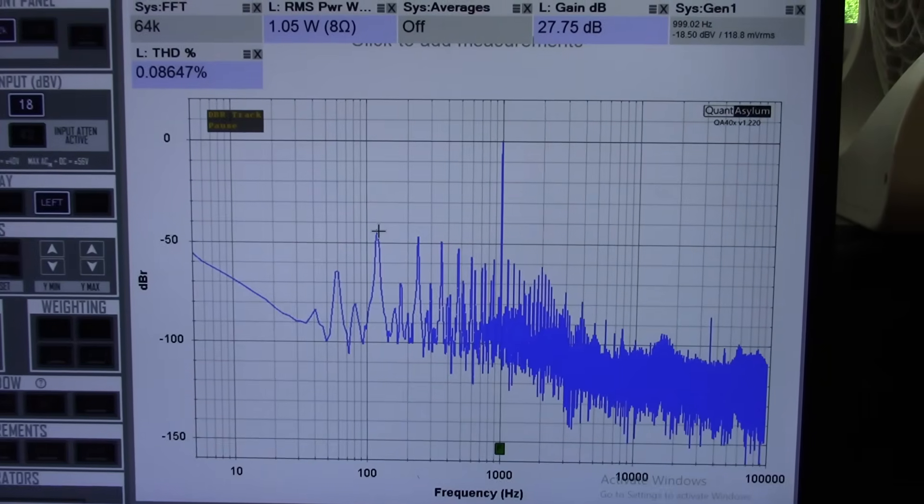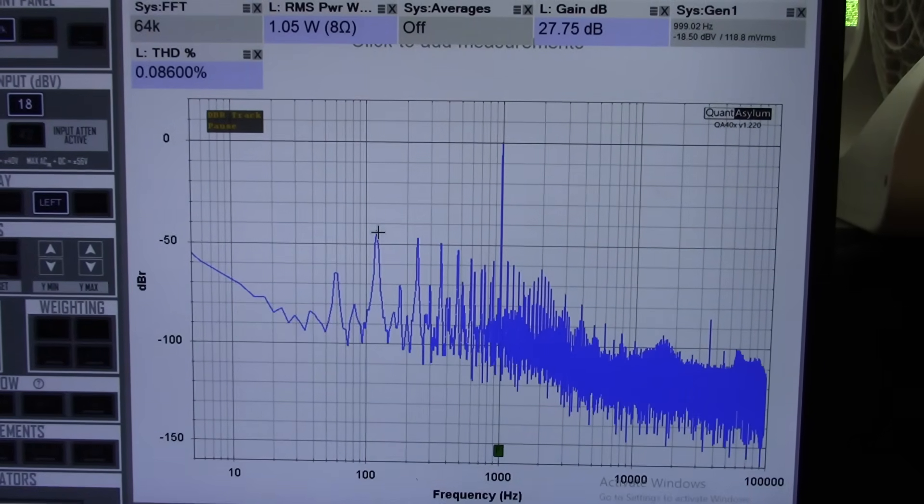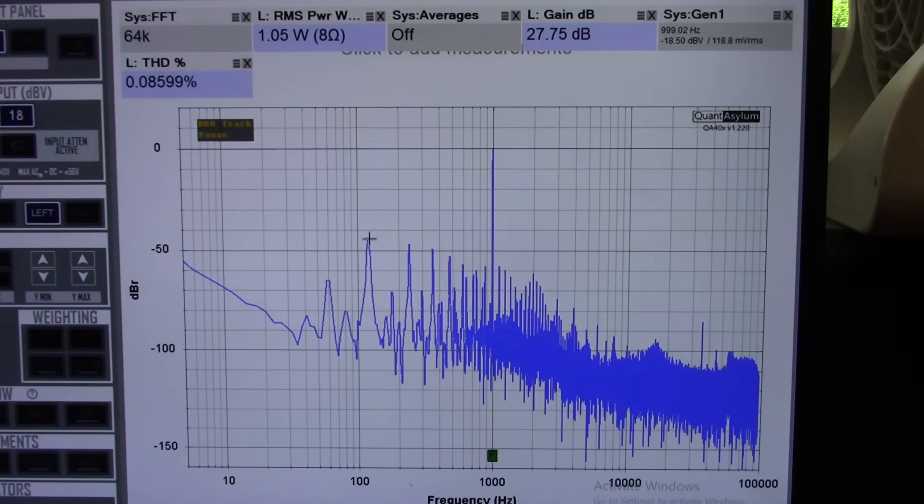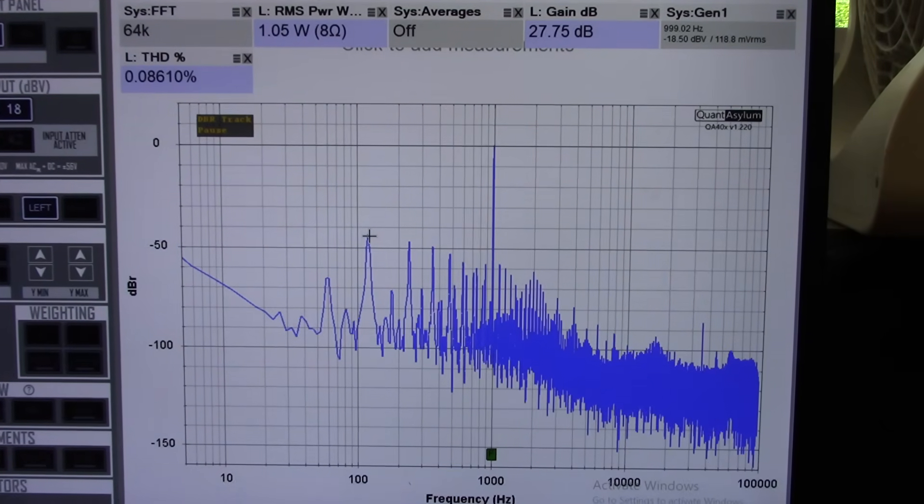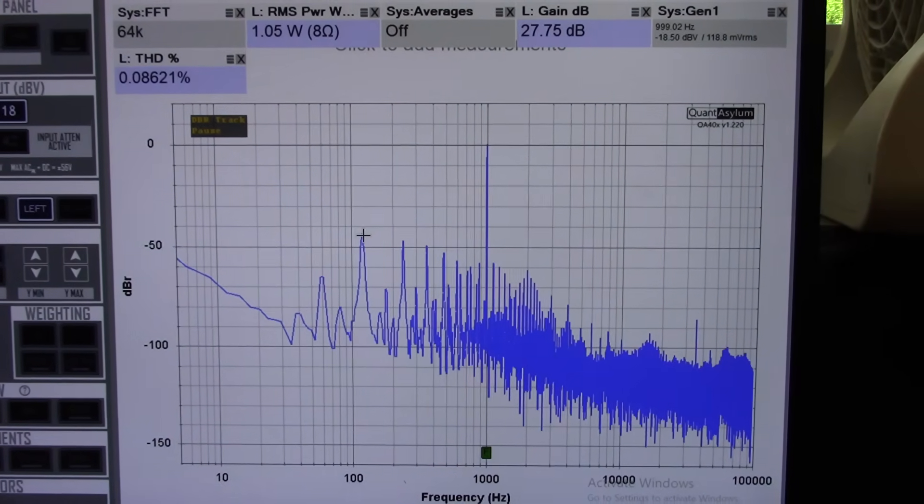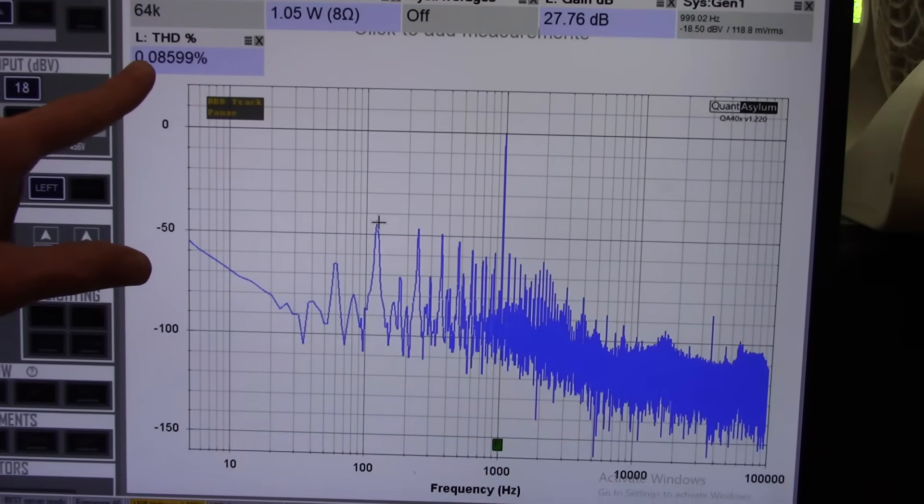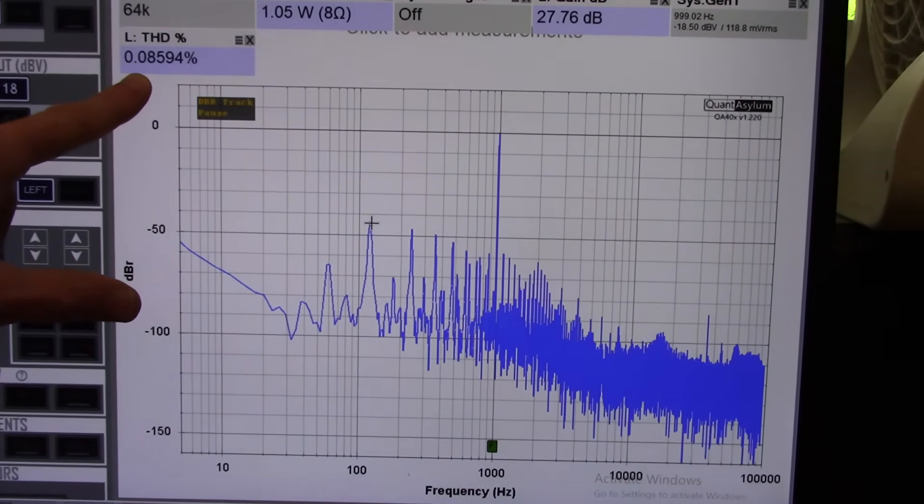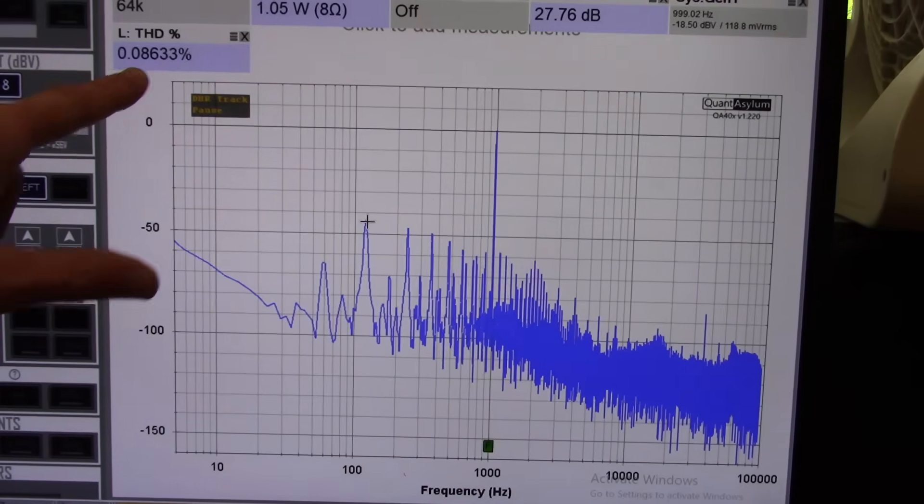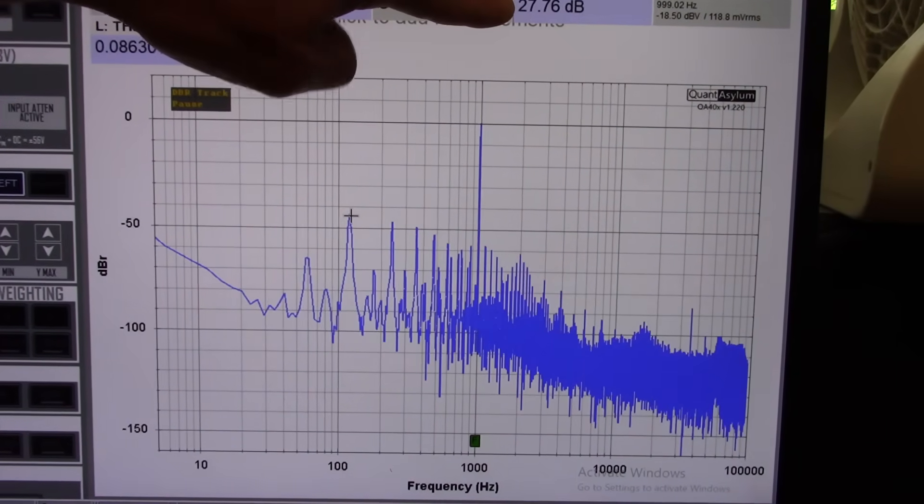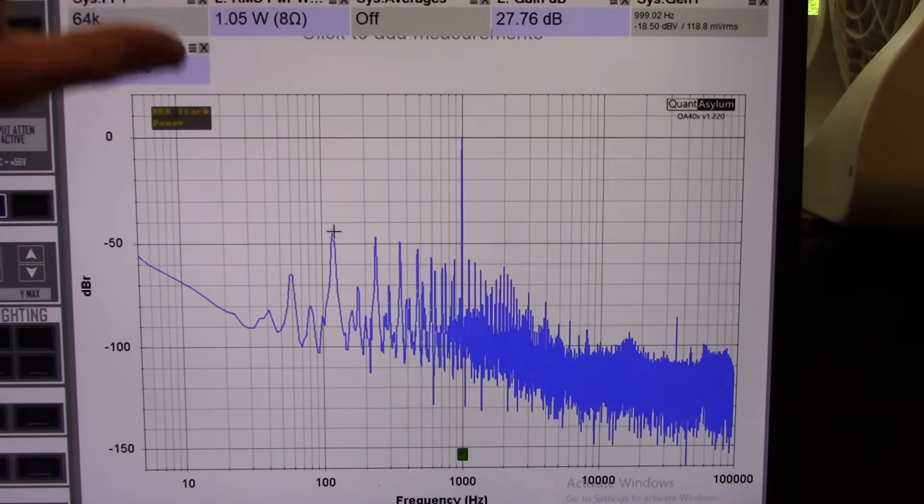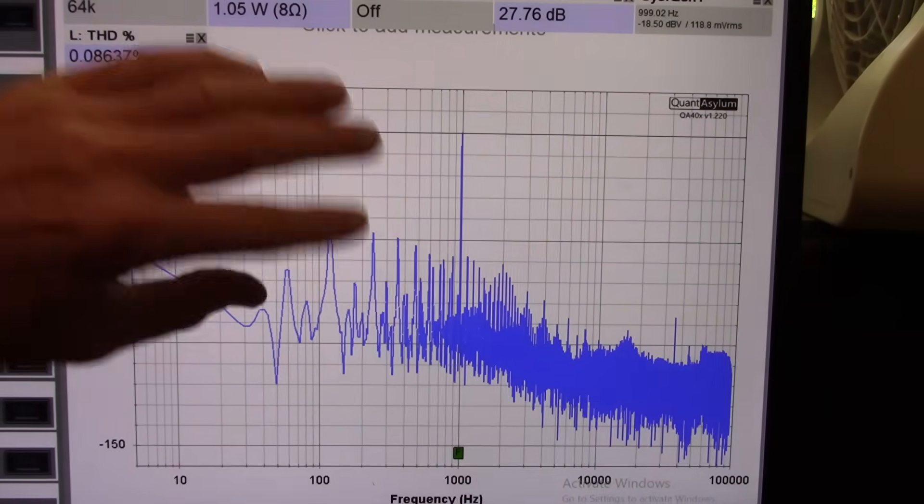Okay, this is my usual kickoff test where I measure the amplifier at 1 watt into 8 ohms at 1 kilohertz. Just to see how things are going here. And you see the distortion is pretty good. It's under 0.1, which I like to see. The gain of the amplifier is 27.76. That's measured with the volume control fully open.